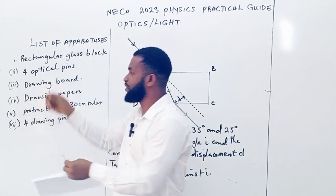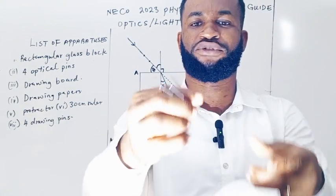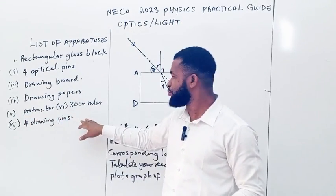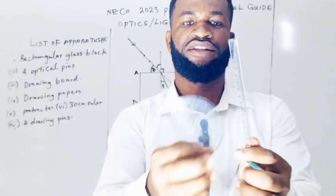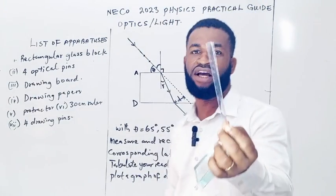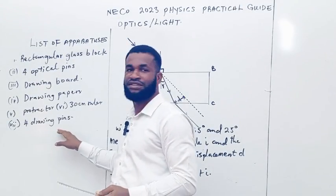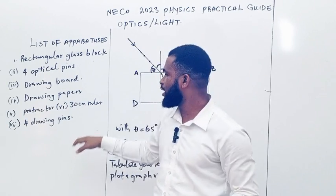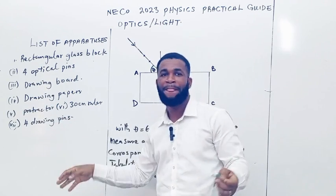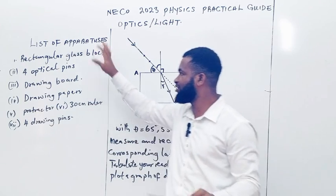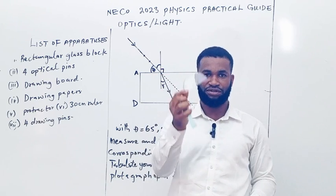These are the optical pins. You need a protractor, a 30cm ruler, and four drawing pins. You can use cellotape or paper tape instead of drawing pins to improvise.